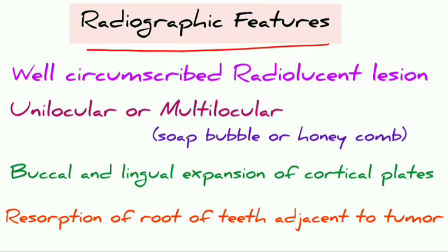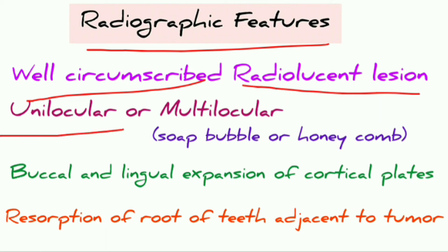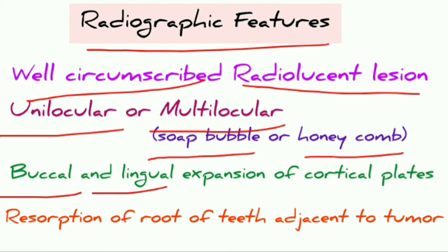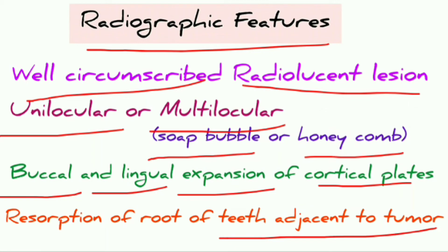Radiographically, it appears as a well-circumscribed radiolucent lesion that can be unilocular or multilocular. In the multilocular form, it can show a soap bubble pattern or honeycomb pattern. It shows buccal and lingual expansion of the cortical plates, and resorption of roots of teeth adjacent to the tumor.